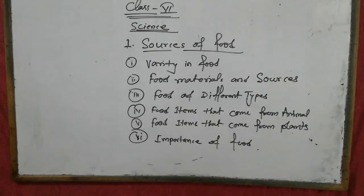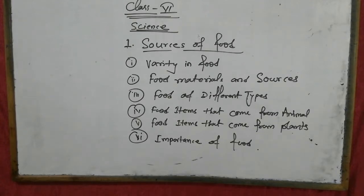In this chapter we will cover lots of topics like variety of food, food materials and sources, food and different types, food items that come from animals and food items that come from plants, and the last topic is importance of food. So we start the first topic which is variety of food.